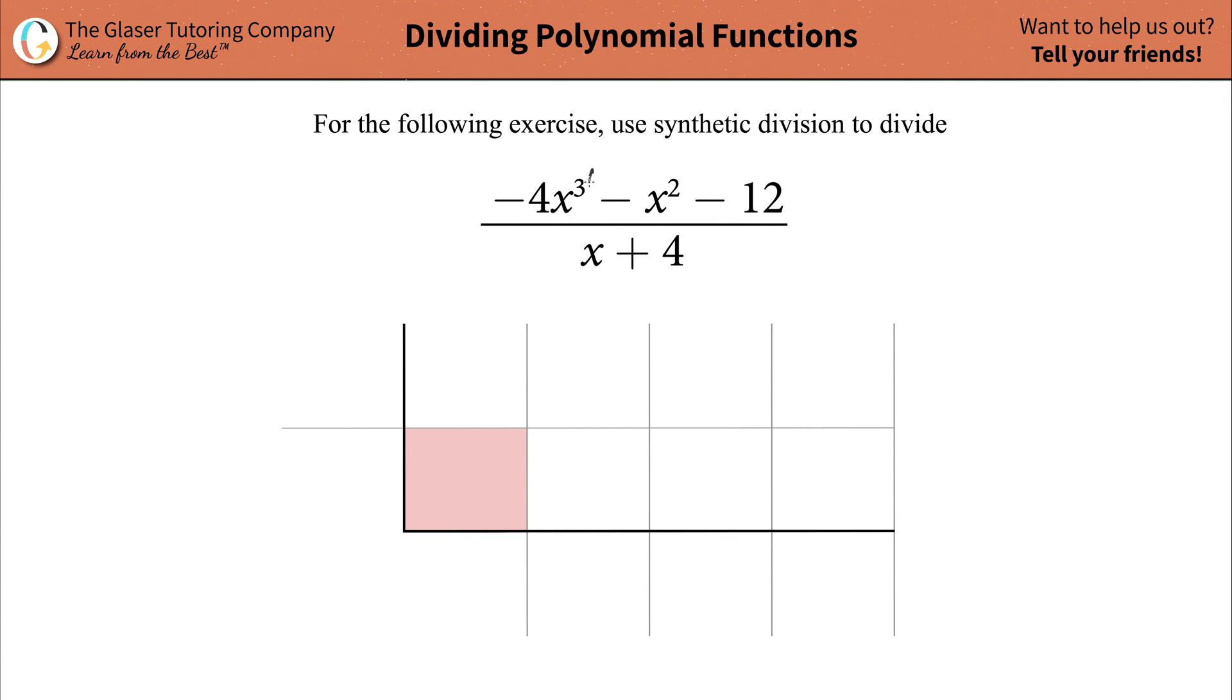Take a look at the highest power of x and then add 1 to that power for a total of 4 in this problem. Well, 3 plus 1 is always going to be 4. But what that's going to tell you is the number of columns necessary inside of that synthetic division table.